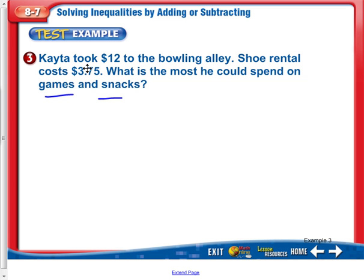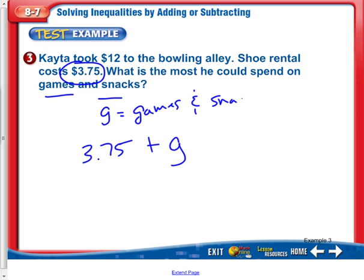Shoe rental is $3.75. We have $3.75 plus, I'm going to say G, and G represents games and snacks. That obviously cannot be greater than or equal to. It's going to be less than or equal to how much money he has. He has $12 total.